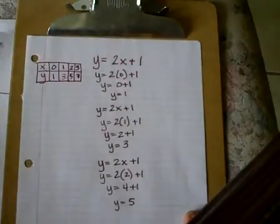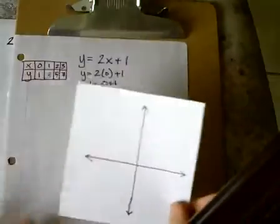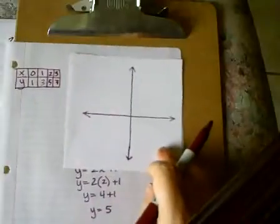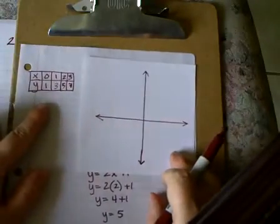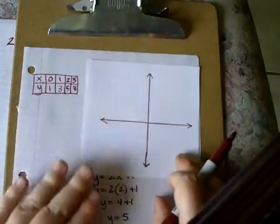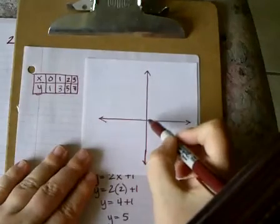Now what I'm going to do is go ahead and graph these points on my graph. I'm going to use my xy table that I created. This is where I keep track of my ordered pairs. I always start at 0, 0.